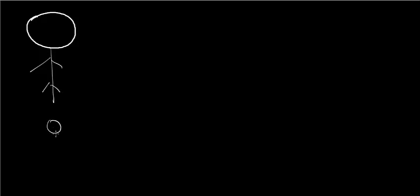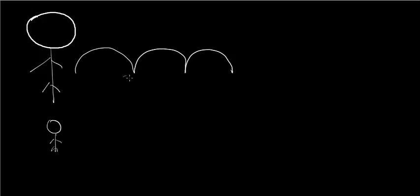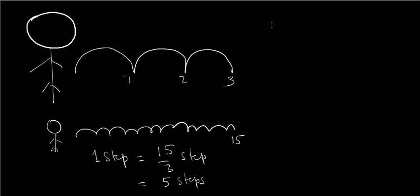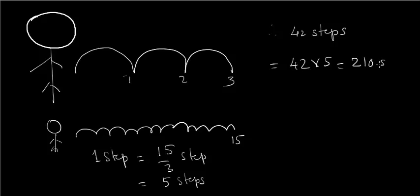When the giant makes 3 steps, Gulliver has to make 15 steps. So one step of the giant equals 5 steps of Gulliver. If the giant has taken 42 steps, Gulliver will have to take 42 × 5 = 210 steps.